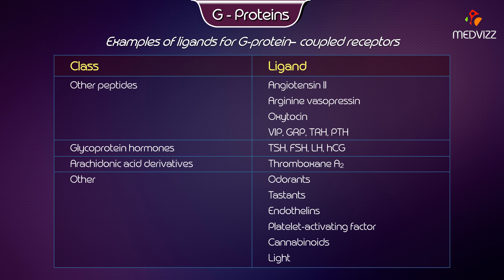Glycoprotein hormones acting as ligands include thyroid-stimulating hormone, follicle-stimulating hormone, luteinizing hormone, and human chorionic gonadotropin. Eicosanoid acid derivatives include thromboxane A2. Other ligands include odorants, tastants, endothelins, platelet-activating factor, cannabinoids, and light.